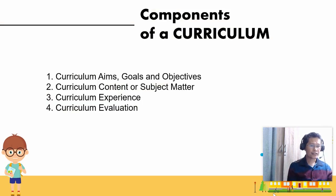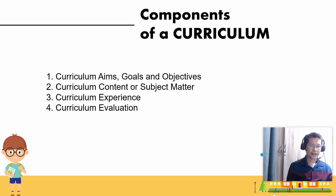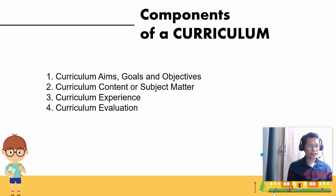Let's now move on to the components of a curriculum. Curriculum plays an important role in an educational system. It is a blueprint which leads the teachers and the learners to reach the desired objectives. Authorities have to design it in such a way that it could lead the teacher and the learner to meet the desired learning outcomes. The four components of the curriculum are: curriculum aims, goals, and objectives; second, curriculum content or subject matter; third, curriculum experience; and the last one is curriculum evaluation.